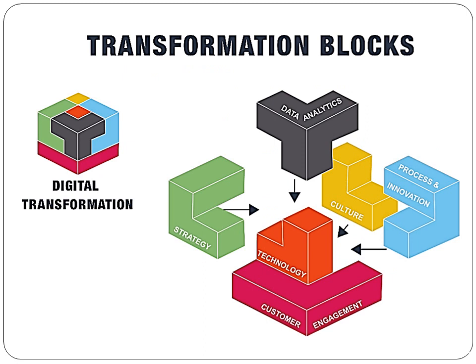The digital transformation framework has six basic building blocks that make digital transformation possible. The first is strategy, second is process and innovation, third is culture, fourth is technology, fifth is customer engagement, and sixth is data analytics. When these six blocks are combined together, they collectively constitute digital transformation.